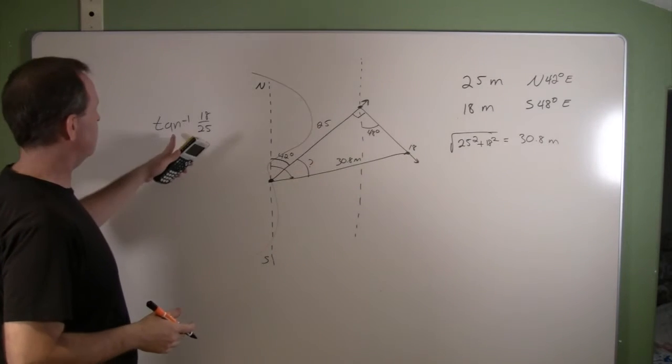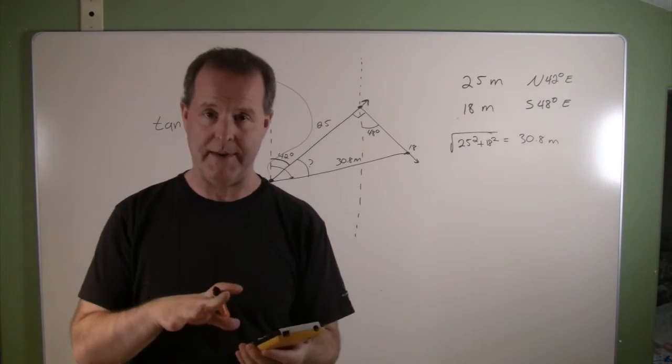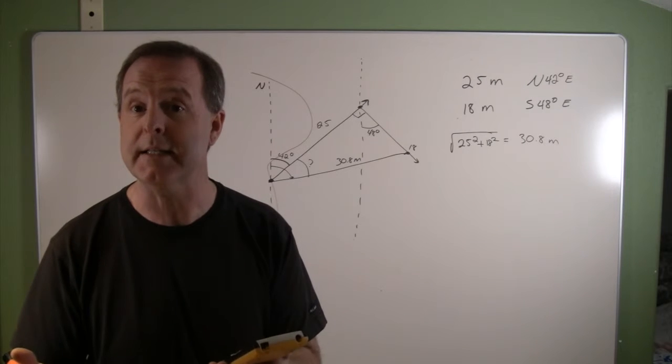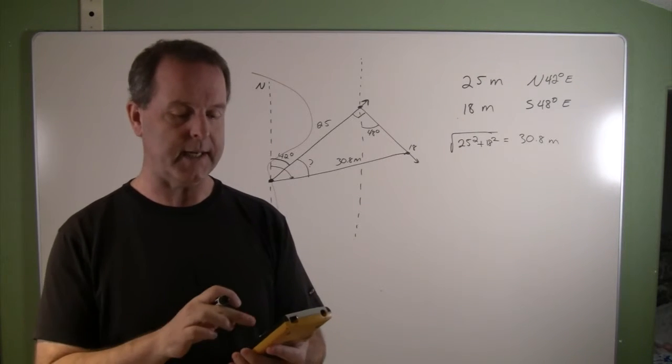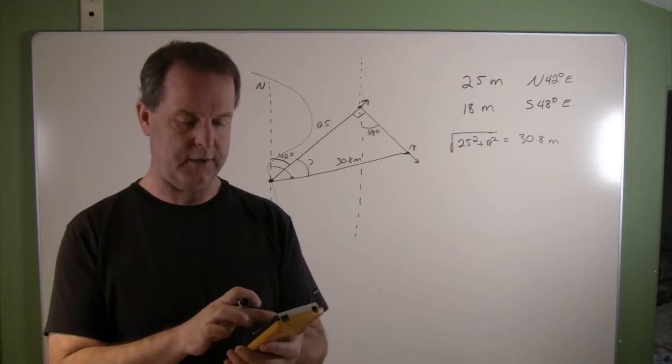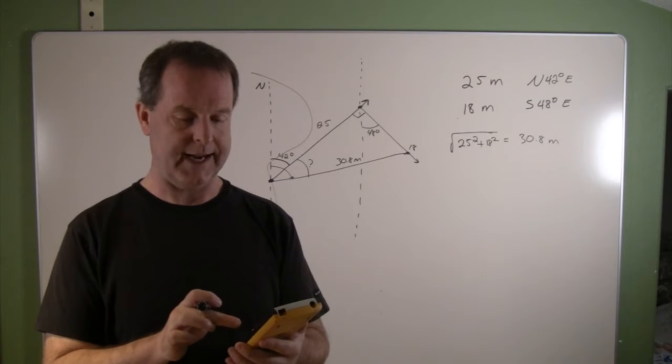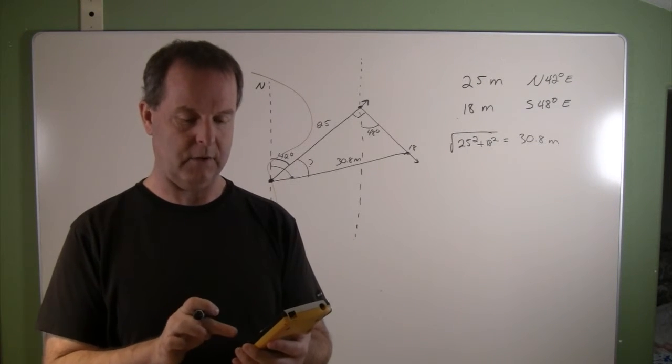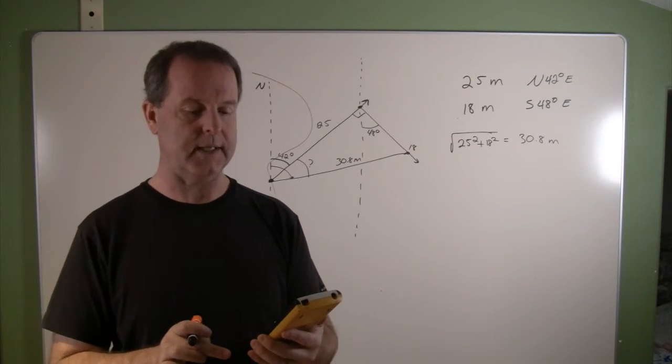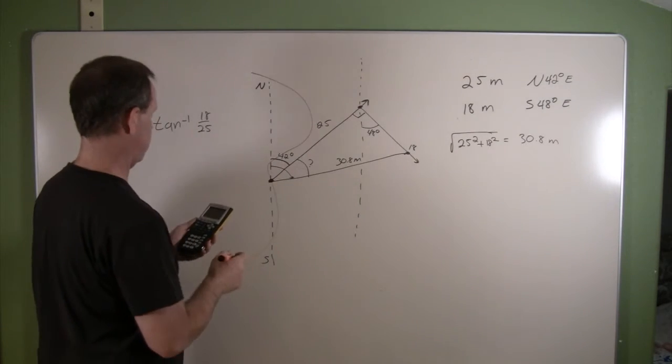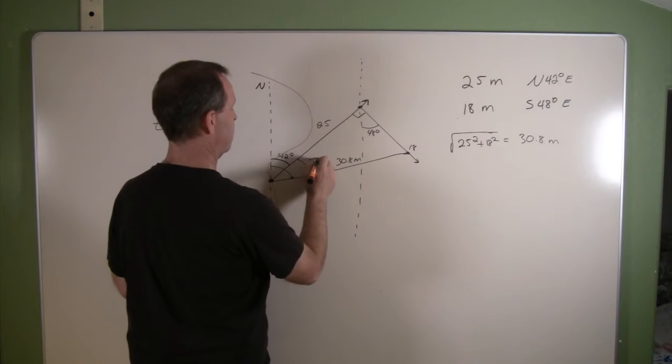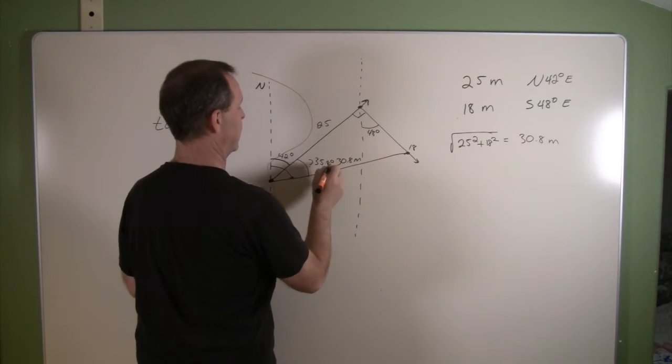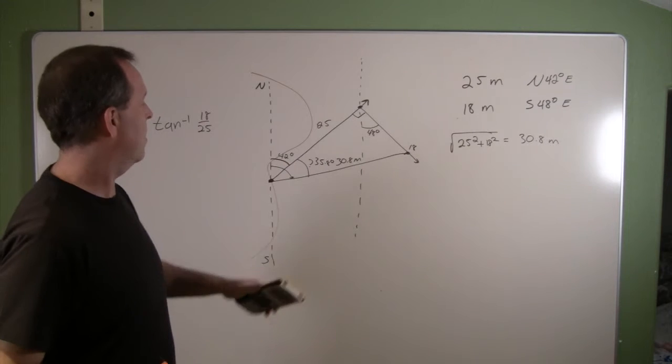Let's crank that out, put that in the calculator. I want to make sure my calculator is in degrees so that my result is degrees. I can do inverse tangent: second tangent, 18 divided by 25, close parentheses. That produces a degree of 35.75 or 35.8 degrees.